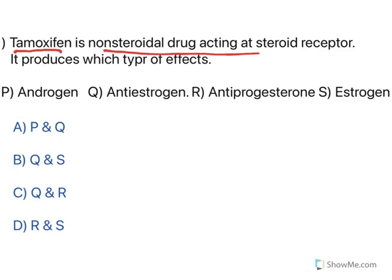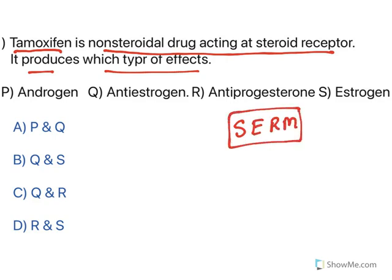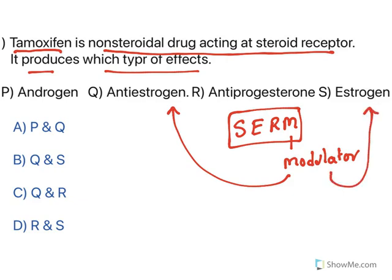Tamoxifen is a non-steroidal drug acting at steroid receptor. Tamoxifen, toremifene, clomifene — all of them are known as selective estrogen receptor modulators. They are called modulators because they can act as anti-estrogen at certain tissues and as estrogen agonist at certain tissues. These drugs are selectively used to treat breast cancer, which is caused by hyper-secretion of estrogen at breast tissue.